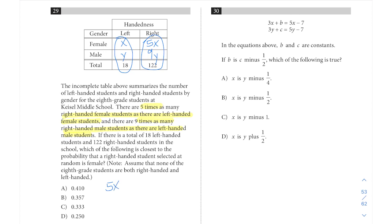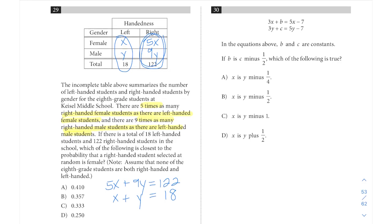Here we know that 5x plus 9y equals 122 if we add together to get our total in that right column, and we know that x plus y equals 18 if we add that together to get our total in that left-hand column.